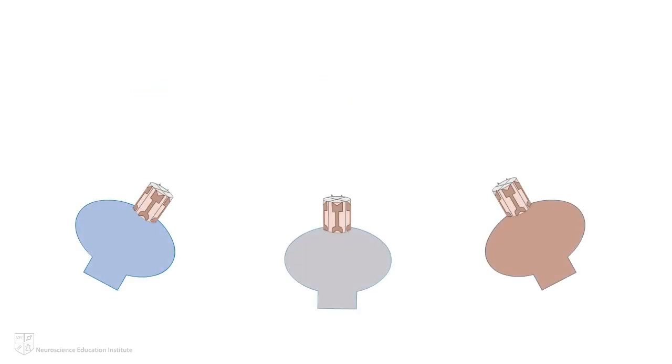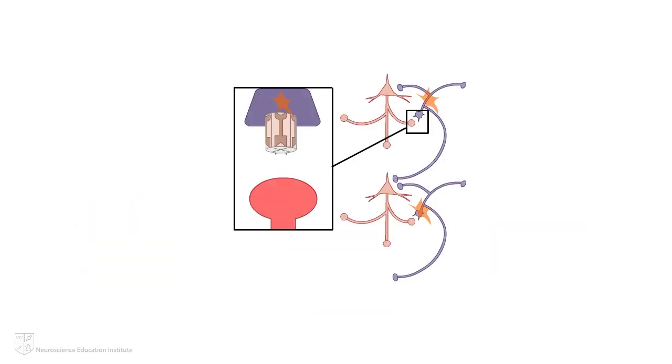Please note that while NMDAR are found throughout the brain on various neuron types, including dopaminergic neurons in the ventral tegmental area, VTA, in the context of this animation series, we should keep in mind the NMDAR found on PV-plus gabaergic interneurons in the cortical network we discussed in Part 2. Let's jump in.